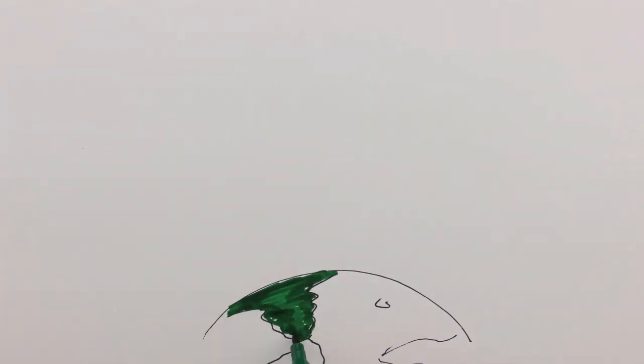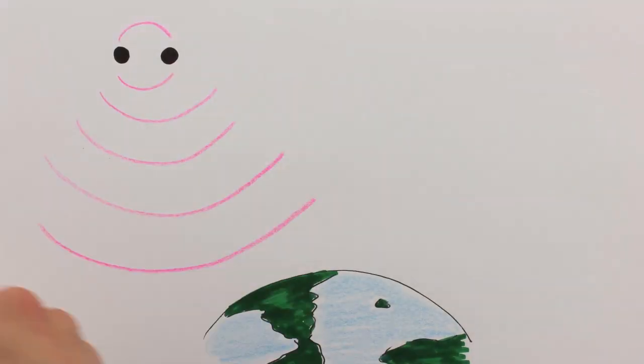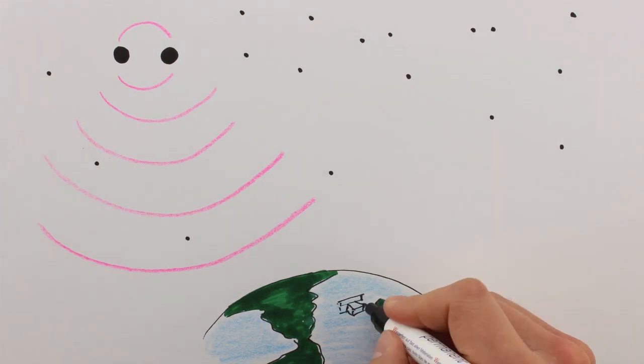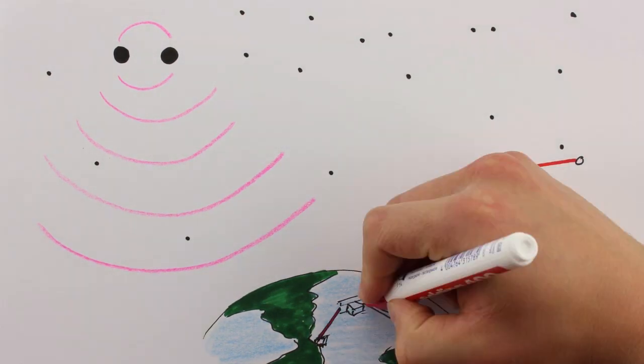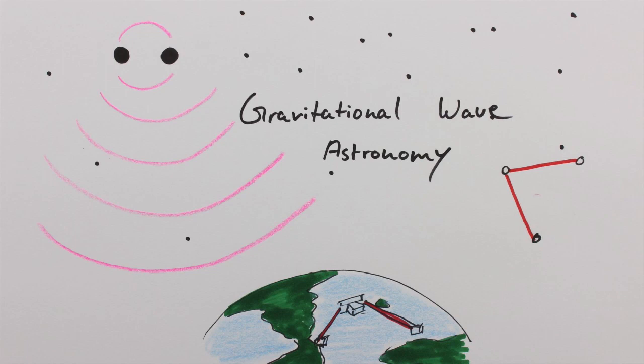But there is another way to perceive the universe. As we know from Einstein's general theory of relativity, massive objects can also emit gravitational waves. Measuring these tiny ripples in spacetime opens up a whole new field: gravitational wave astronomy.